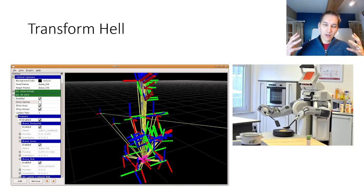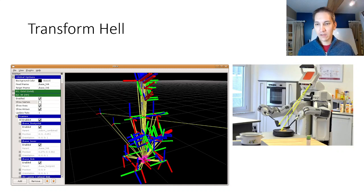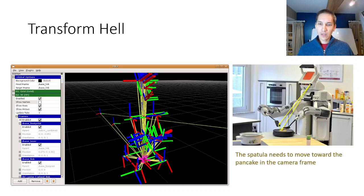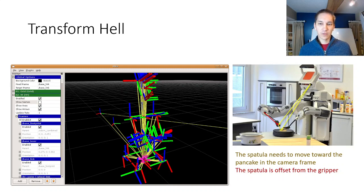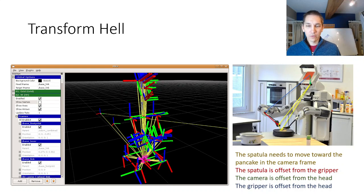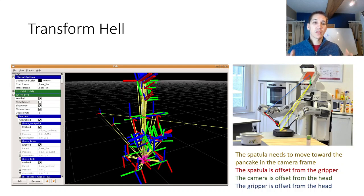With robotics we have to ask very complex questions like: if I were to have this robot trying to make this pancake here, it could have a camera sensor and it looks at the spatula, it sees the pancake, and we want the spatula to scoop up the pancake. We only have measurements in the camera frame, we know the spatula is offset from the gripper, and there's an offset from the camera to the head and from the gripper to the head. By the end of this lecture you should be able to calculate this kind of quantity.